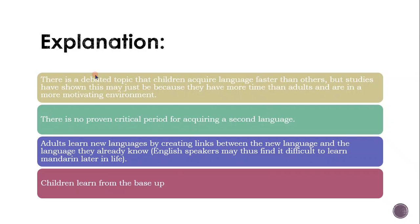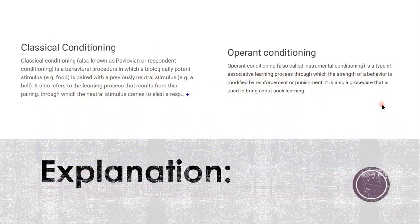There is a debated topic that children acquire a second language faster than adults, but studies have shown this may be because they have more time than adults and are in a more motivating environment. There is no proven critical period for acquiring a second language. Adults learn new languages by creating links between the new language and the language they already know — so English speakers find it difficult to learn very different languages later in life. Children learn from the base up, figuring out morphology through trial and error, whereas English speakers can make connections — for example, to Latin.